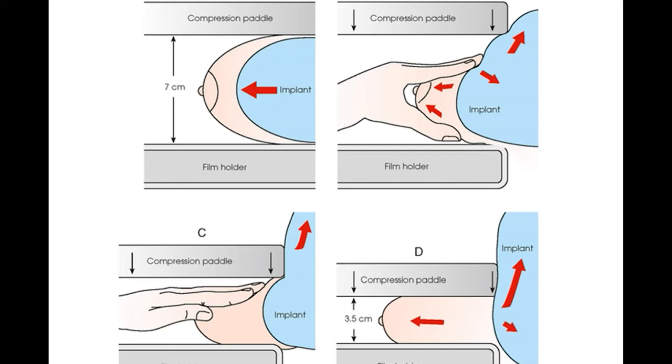For breasts with implants, we perform the Eklund maneuver. In this maneuver, we push the implant towards the posterior side and the breast parenchyma anteriorly, then apply compression so that the breast parenchyma is properly visualized while the implant is moved posteriorly. This lecture covered mammography positioning, different mammographic views, how these views are obtained, and how to determine whether a mammographic image is accurate and adequate.